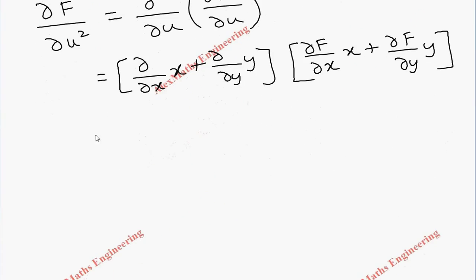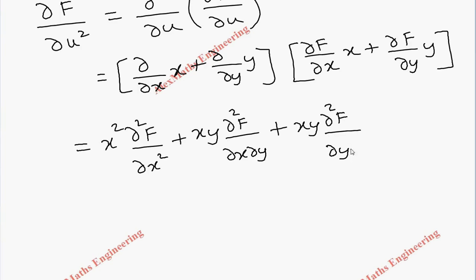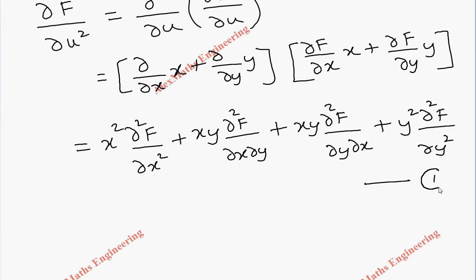Now we expand this. The first term with the first term gives x²·∂²f/∂x². The first term with the second term gives xy·∂²f/∂x∂y. The third term — second term with the first term — gives xy·∂²f/∂y∂x. And the last term is y²·∂²f/∂y². Let's keep this as the first expression.